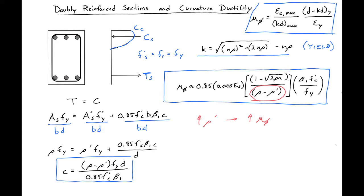So in this simple approximate expression, if we were to have a reinforcement ratio of the compression steel equal to our reinforcement ratio of the tension steel, then we could essentially get a curvature ductility that would approach infinity. So an infinitely ductile section.